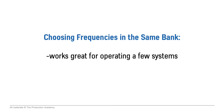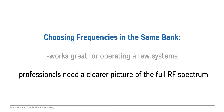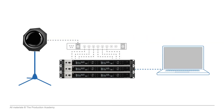Just choosing frequencies in the same bank works great for operating a few systems, but professionals who run a large number of wireless systems simultaneously need a clearer picture of the full RF spectrum in real time. We can use measurement software on a computer, and we can plug a computer via Ethernet straight into these digital 6000 systems to get access to all the information they have. There are also companies that make specialized tools for RF technicians — some very advanced — and in a crowded wireless environment like a huge music festival, having these advanced options can be a lifesaver.